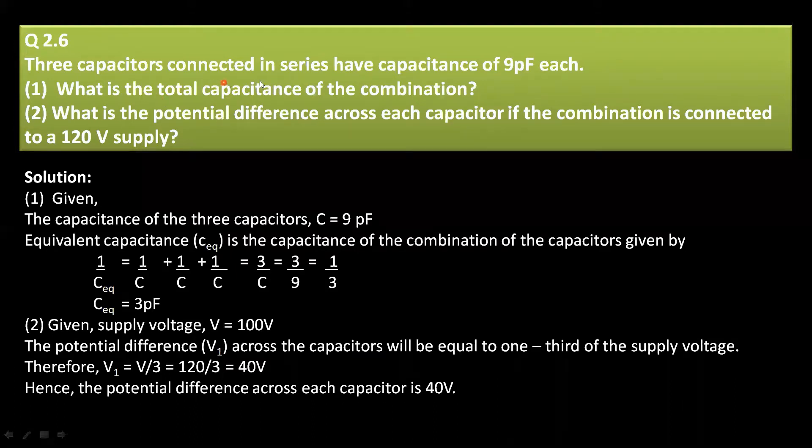Three capacitors connected in series have capacitance of 9 picofarad each. Let us draw three capacitors which are connected in series. Here it is three capacitors which are connected in series each is having capacitance of 9 picofarad. The capacitance of three capacitors is 9 picofarad.